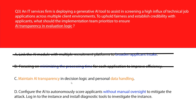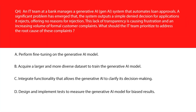Option C says maintain AI transparency in the decision logic and personal data handling. Transparency builds trust and supports fairness in automated decision making, which is essential when deploying AI in sensitive processes like hiring — let's keep it. Option D says configure the AI to autonomously score applicants without manual oversight. Removing manual oversight risks biased outcomes and weakens applicant confidence — incorrect. We'll lock option C as the right answer.